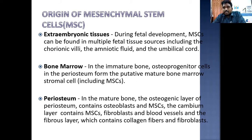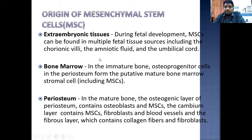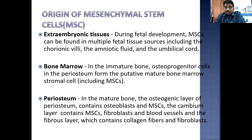So where do mesenchymal stem cells come from? They can come from extra-embryonic tissues, bone marrow, or the periosteum. From extra-embryonic tissues during fetal development, mesenchymal stem cells can be found in multiple fetal tissue sources including chorionic villi, amniotic fluid, and the umbilical cord. In bone marrow, immature marrow osteoprogenitor cells in the periosteum form the putative mature bone marrow stromal cells, including mesenchymal stem cells.